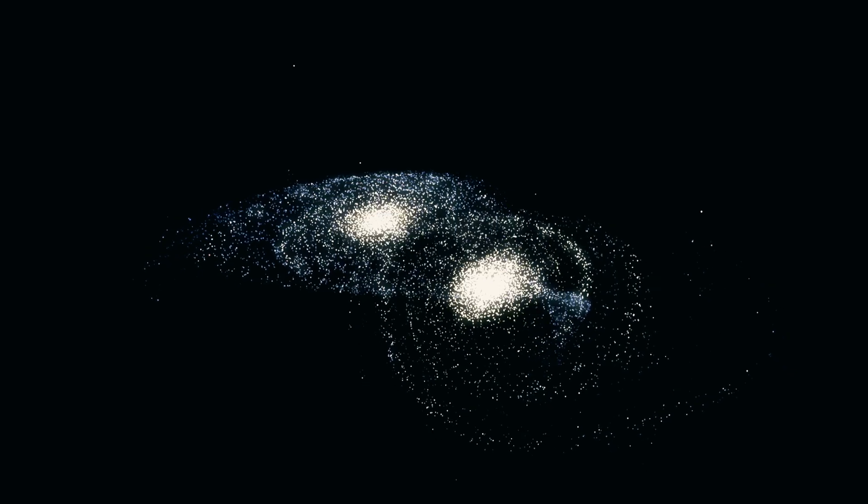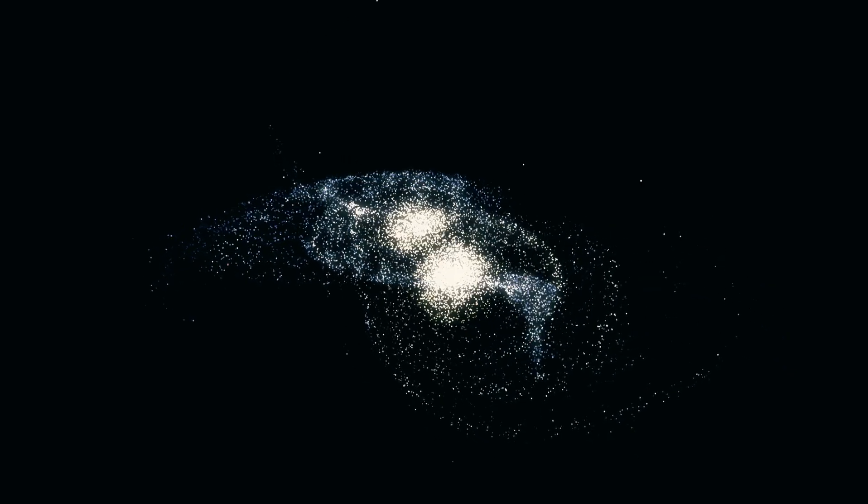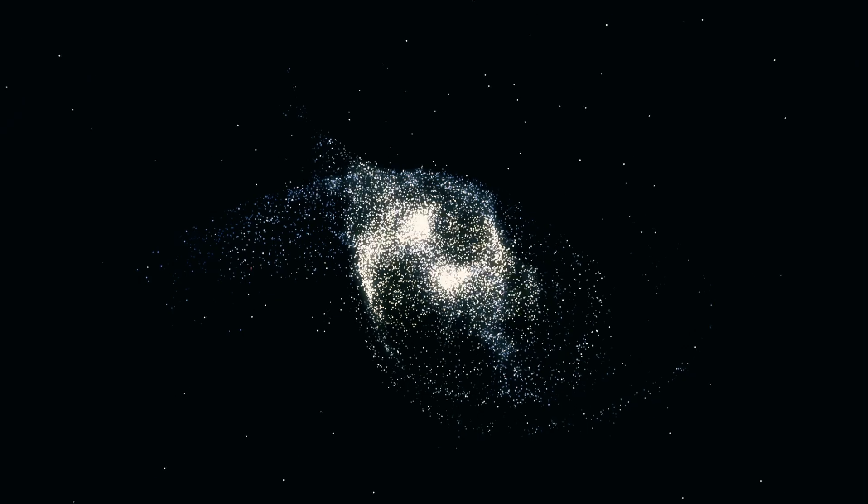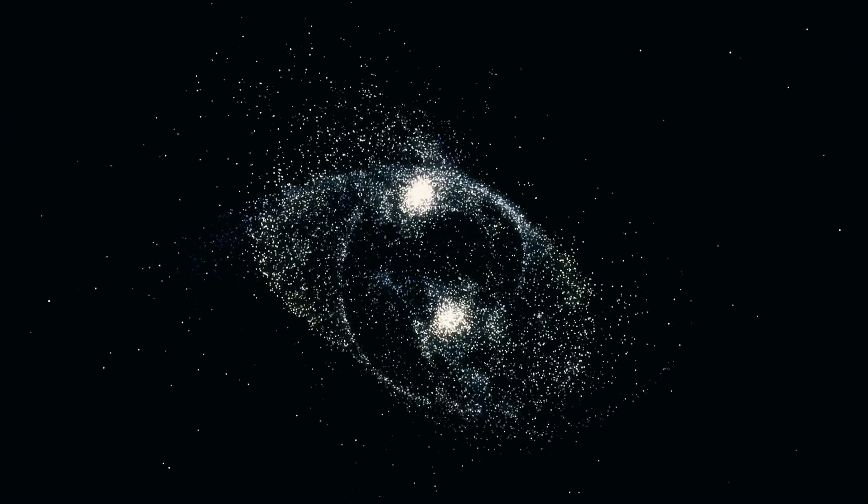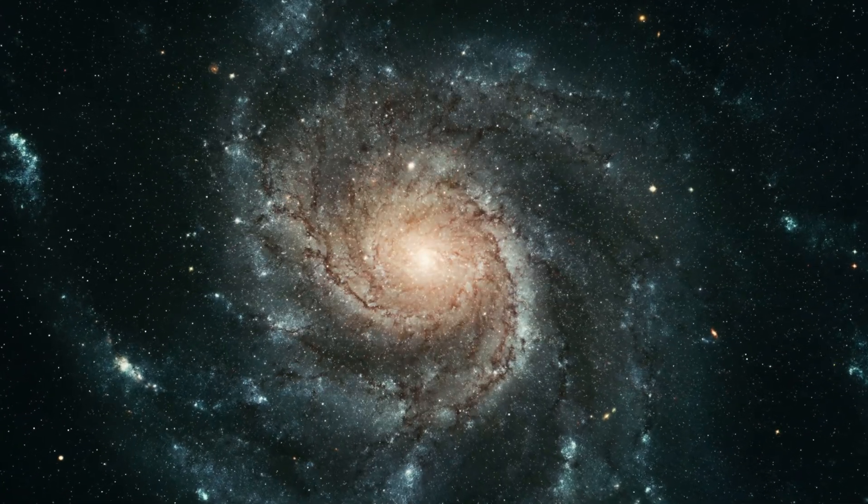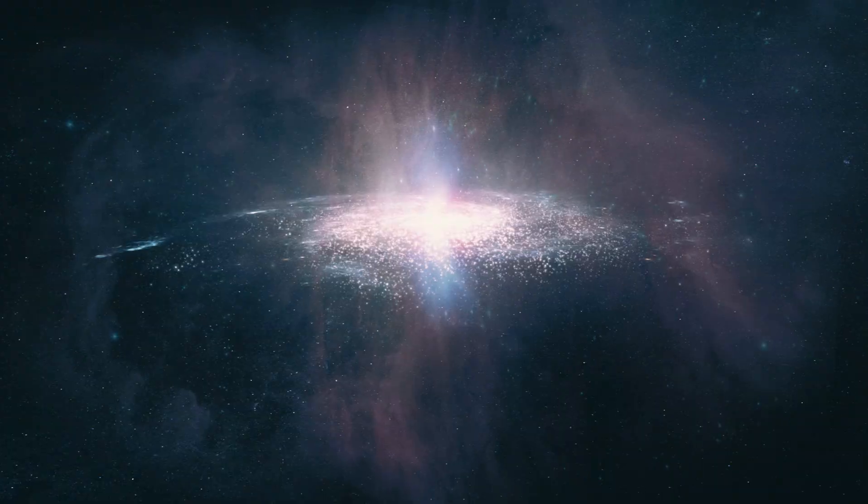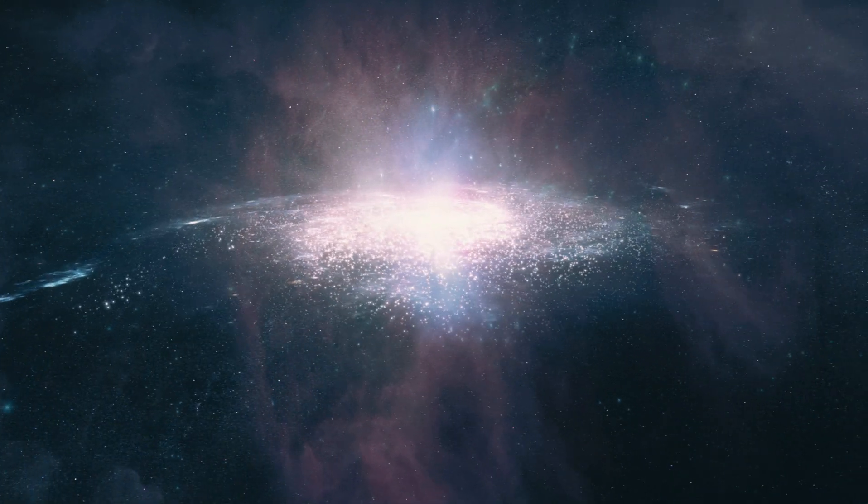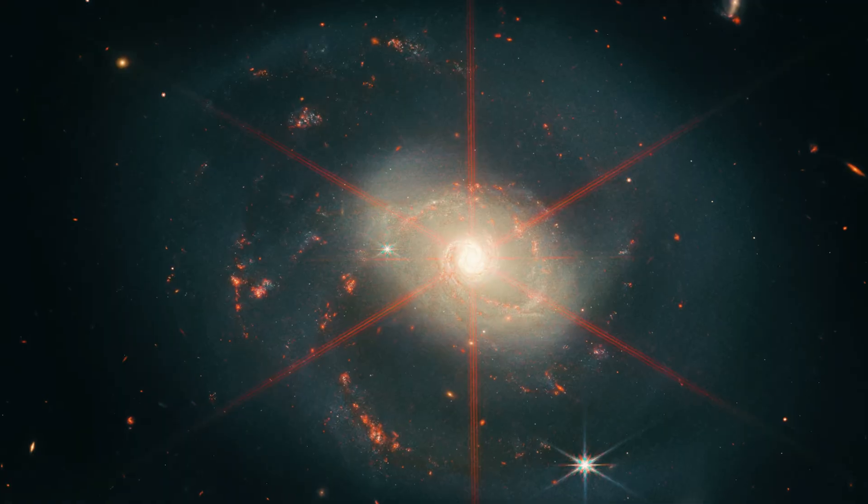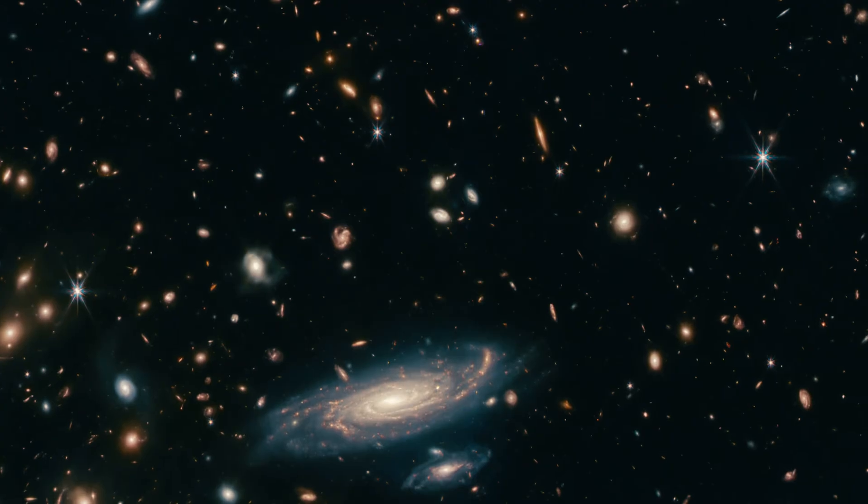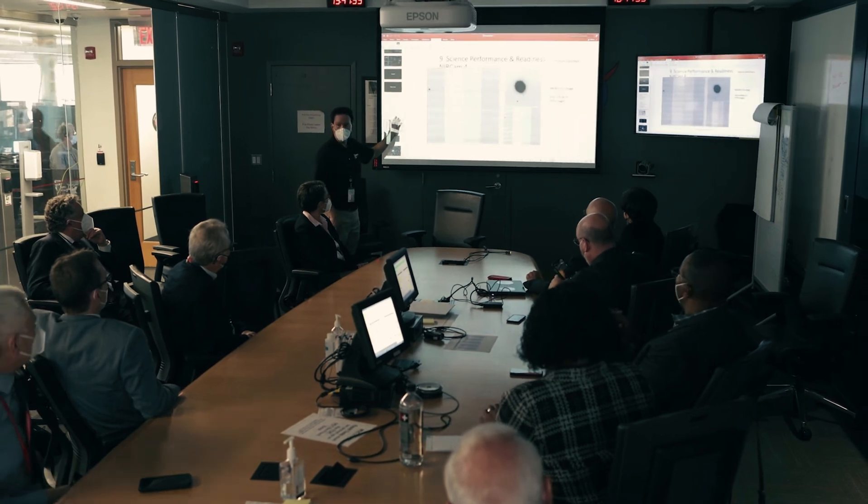At present, the Andromeda galaxy is traveling at a speed of roughly 200 meters per second toward our Milky Way. Considering this, our merger will take place in the next 4.5 billion years. However, James Webb's evidence now suggests that this interstellar collision could occur far sooner than previously believed. But why is this happening at all?